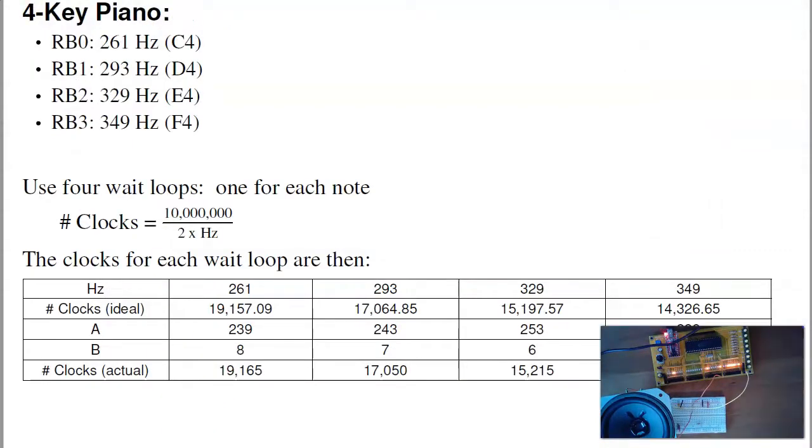If you want to get fancier, I could build a four-note piano. So this will be about the same code as before, but now I'm going to have four separate subroutines. The first subroutine waits for 261 hertz. The second subroutine waits for 293 hertz, 329 hertz, and 349 hertz. To do that, I'll come up with four different wait loops. To calculate the number of clocks, that's 10 million divided by 2 divided by your frequency. So to play note C4, I want to wait 19,157 clocks.